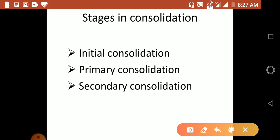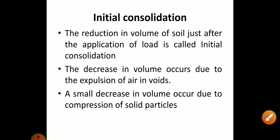There are three stages in the consolidation process: initial consolidation, primary consolidation, and secondary consolidation. In the first stage, initial consolidation, there is a reduction in the volume of soil just after the application of load. This decrease in volume occurs due to the expulsion of air in the voids, and a very small decrease in volume may also occur due to the compression of solid particles.